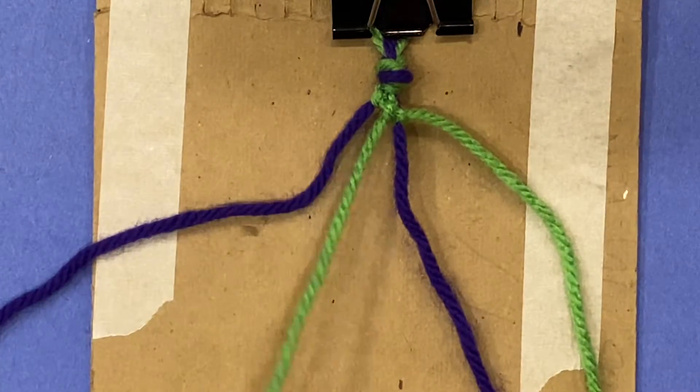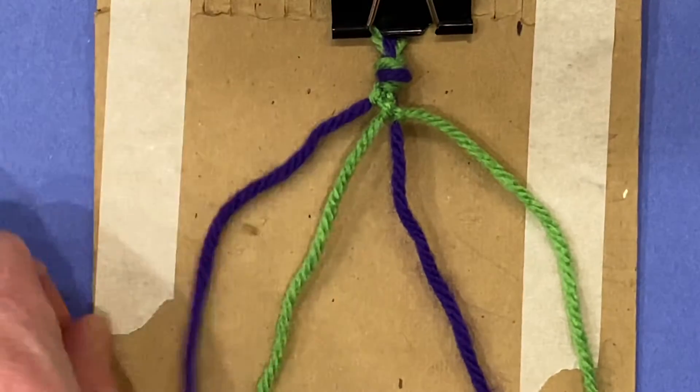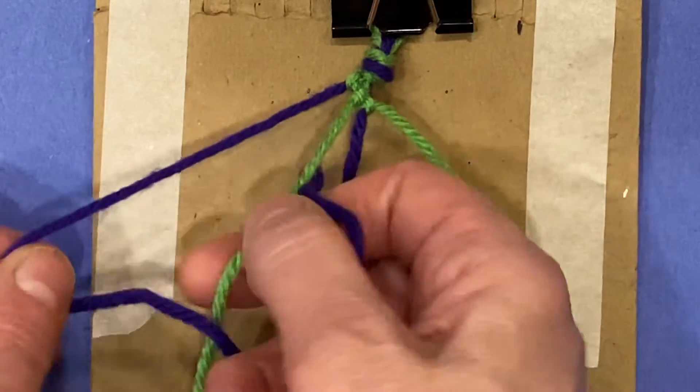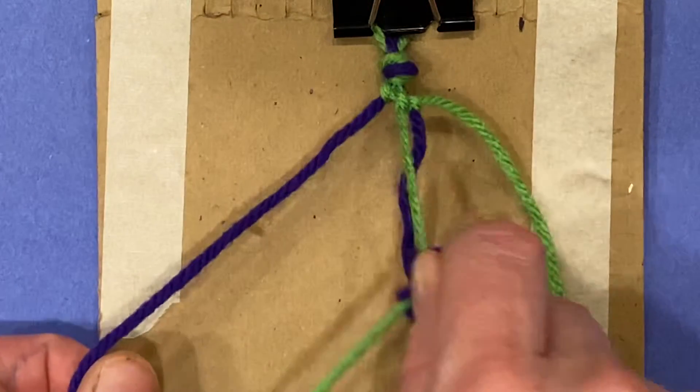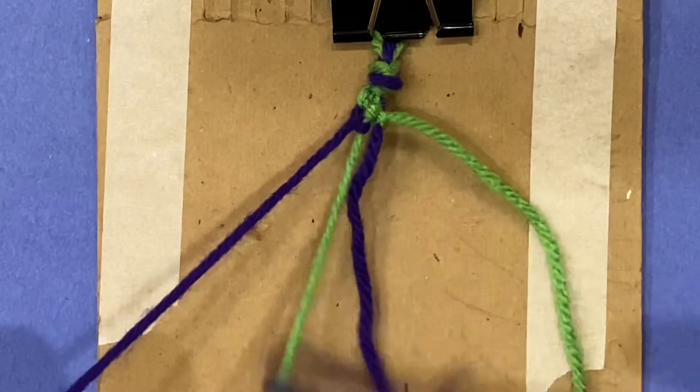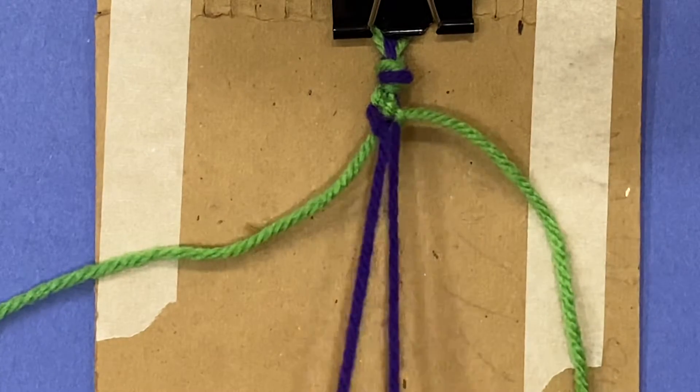The next one I'm going to do the same thing. This time I'm starting with the purple all the way on the left. So again, I'm going to make this triangle and make the tail go under the green. So green and purple. These are like incredible Hulk colors.